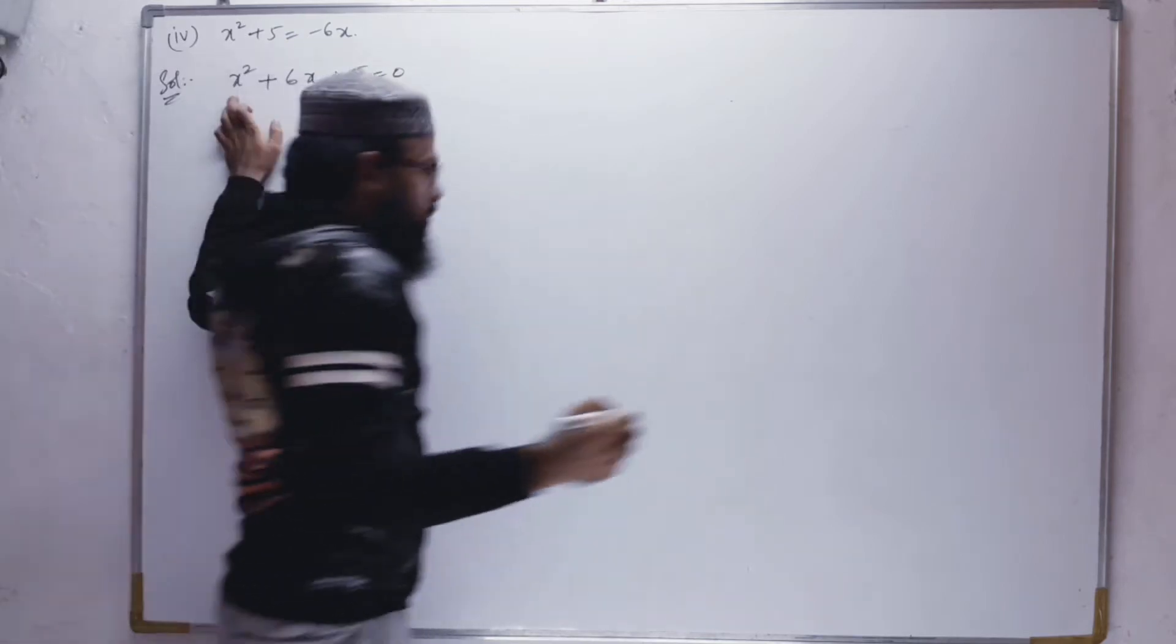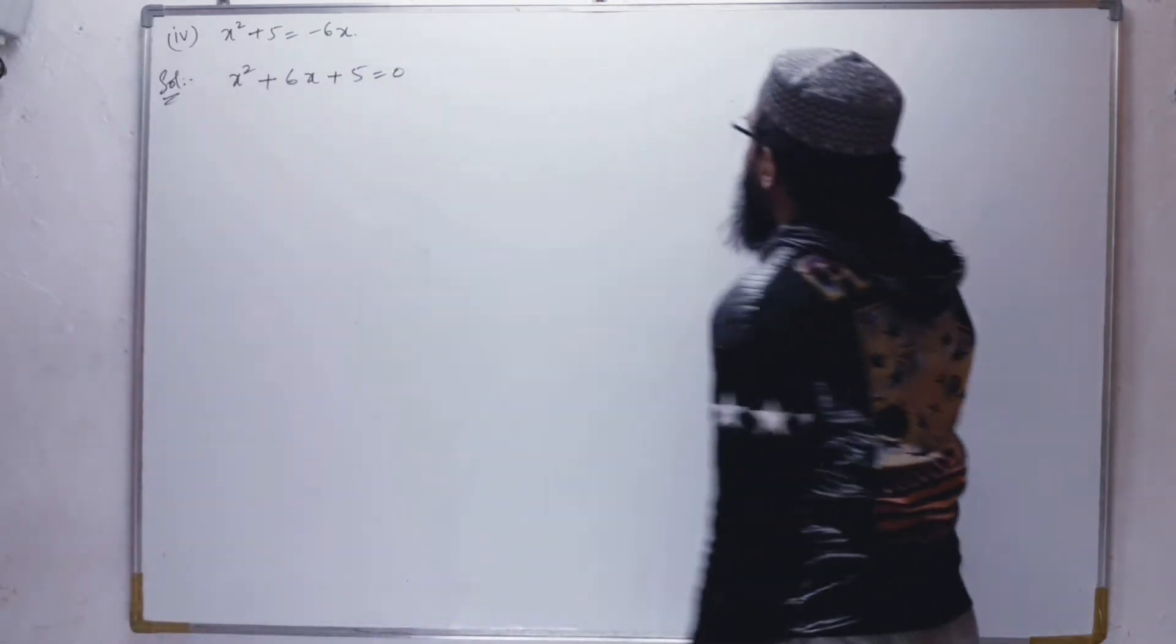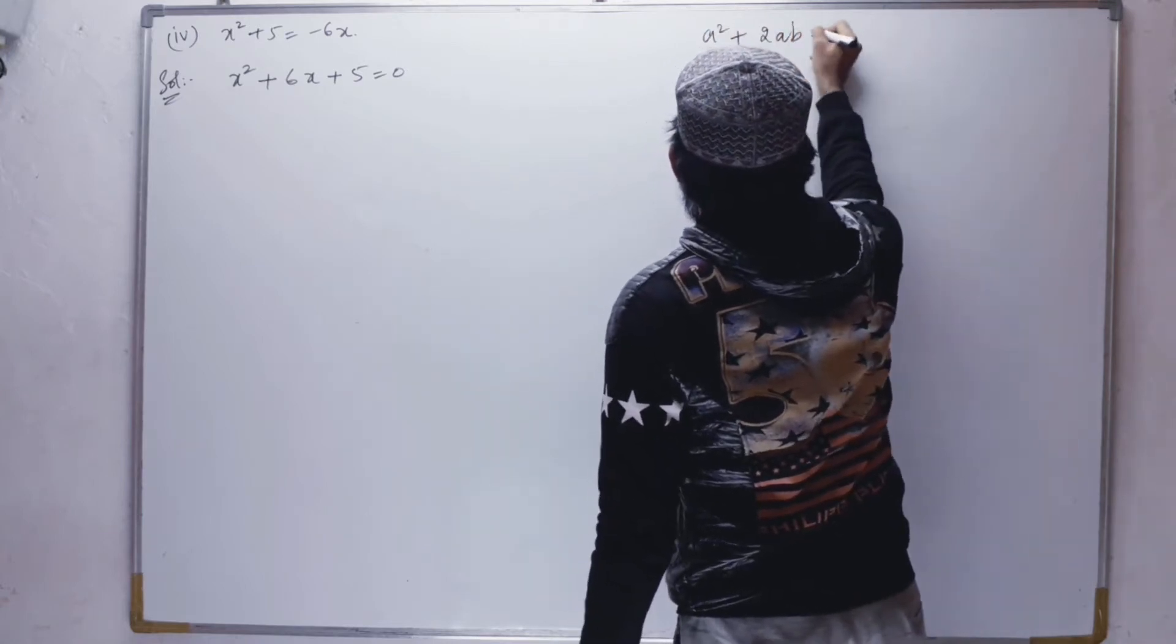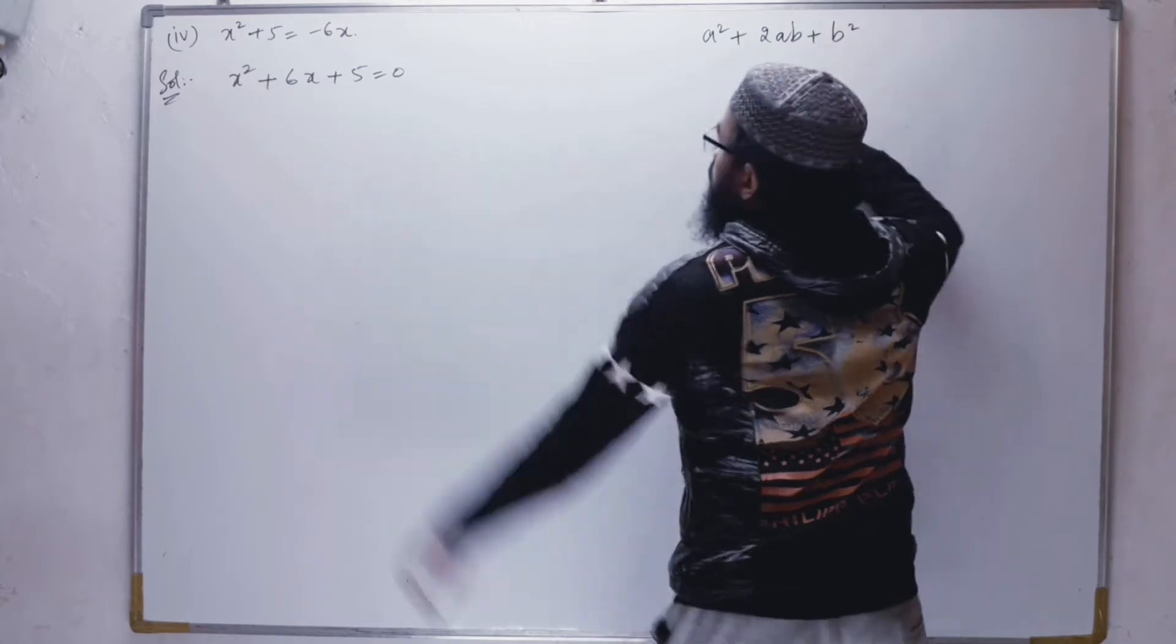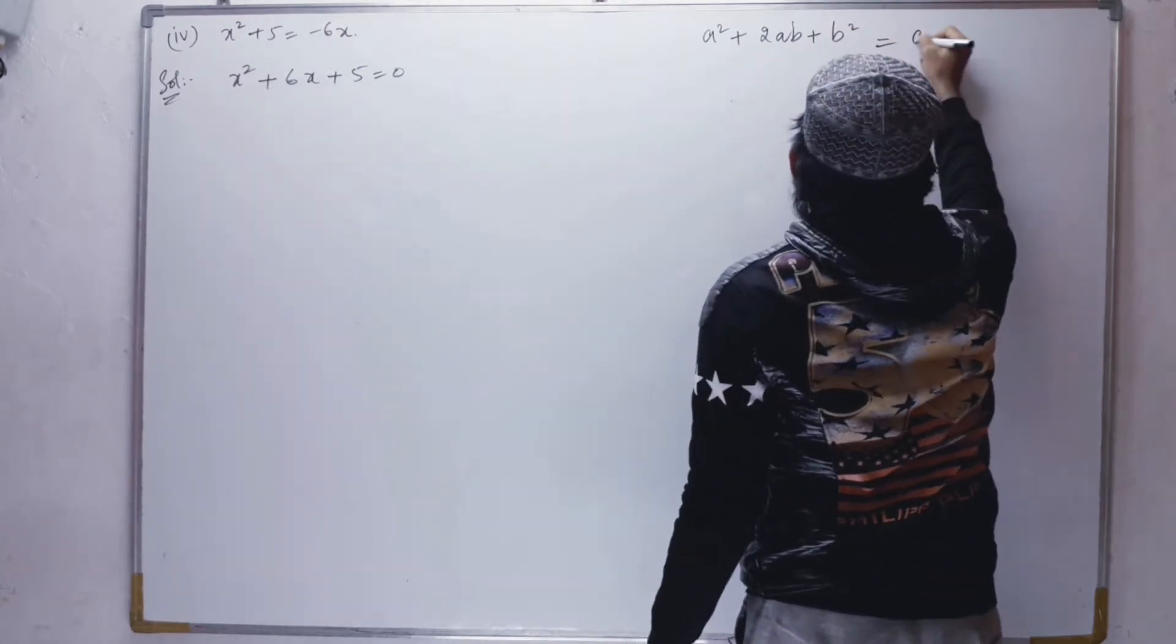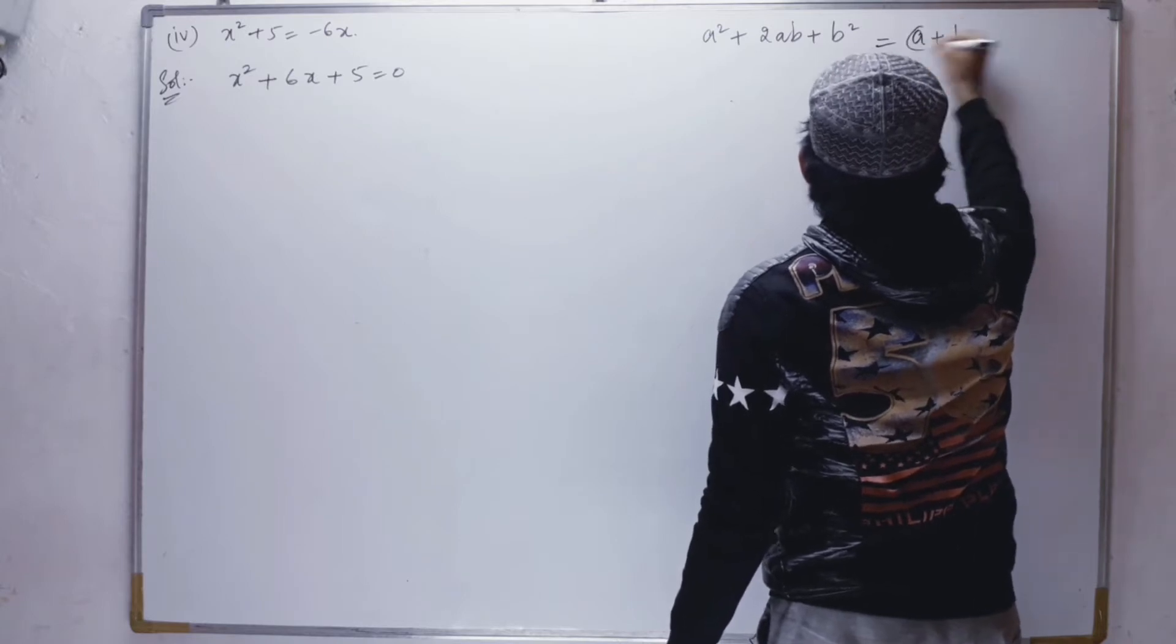Now for the completing the square method, we have to write the formula. The formula is a² + 2ab + b² = (a + b)². Since it is plus, we are going to write it as (a + b)².